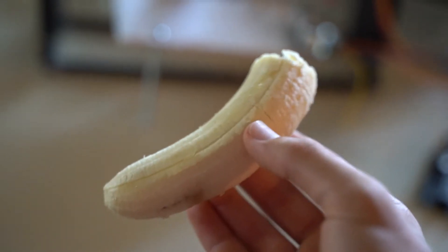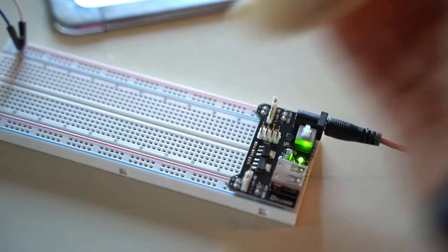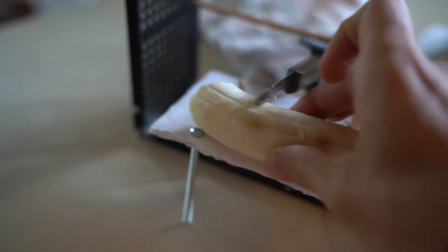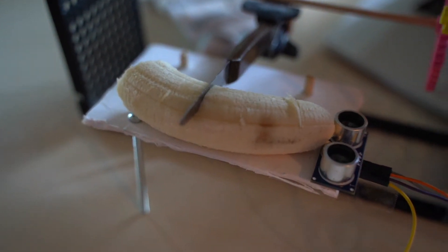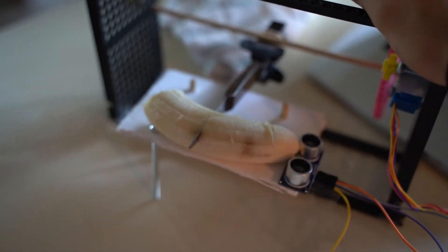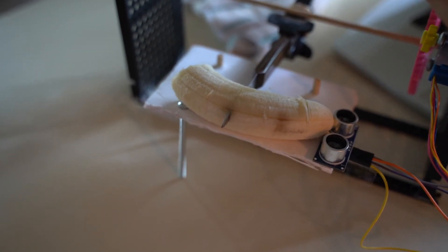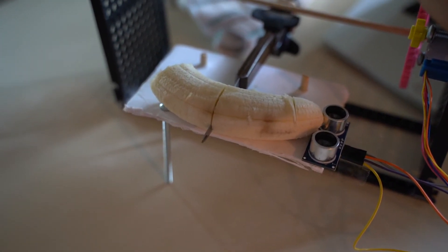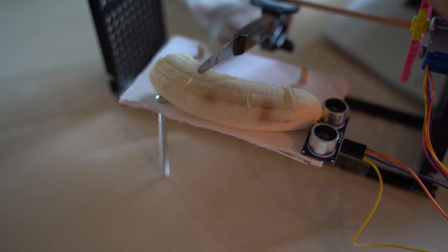Now I will take this piece of banana right here, turn the machine on, and then place the banana underneath the cutter. It will cut all the way through and then raise back up.